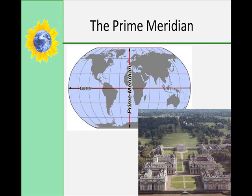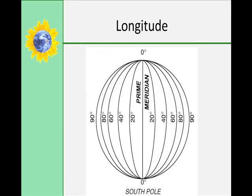The prime meridian is an imaginary line or semicircle that runs through Greenwich, England from the north pole to the south pole. It divides the earth into two hemispheres: the eastern and western hemisphere. Angular distance in degrees east or west of the prime meridian is called longitude. Imaginary semicircles, or meridians, are drawn around the earth from the north to the south pole and represent lines of longitude. The longitude at the prime meridian is zero degrees.